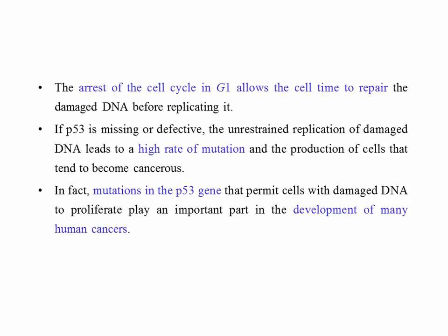G1 arrest is basically stopping the cell cycle at a particular point. If P53 is missing or defective — if somebody has a mutation in the P53 gene — the essential function is not performed. The unrestrained replication of damaged DNA leads to a high rate of mutation, and the production of cells that tend to become cancerous. Mutations in the P53 gene play an important part in the development of many human cancers; analysis of many human cancers shows the P53 gene is mutated in many cases.